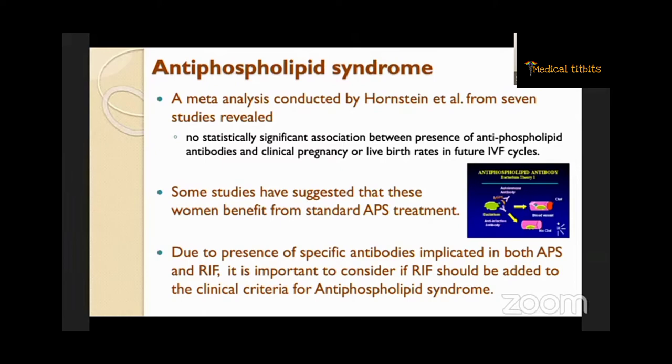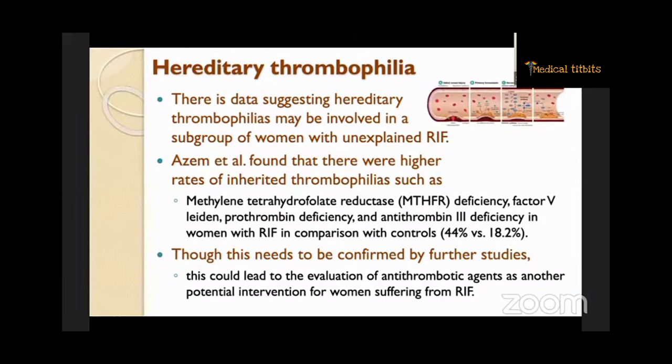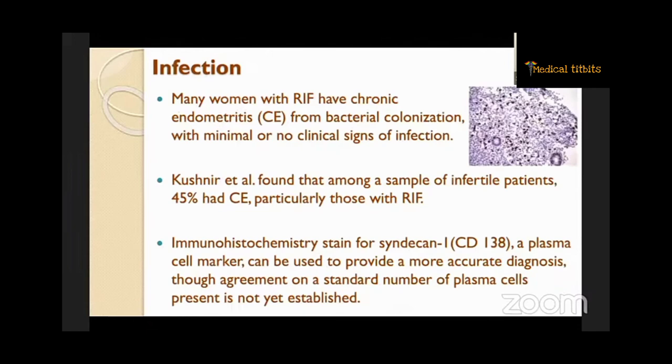When it comes to hereditary thrombophilia, there is data suggesting hereditary thrombophilias may be involved in a subgroup of women with unexplained RIF. Azam et al. found higher rates of inherited thrombophilias such as methylenetetrahydrofolate reductase deficiency, factor V Leiden, prothrombin deficiency, and antithrombin 3 deficiency in women with RIF compared with controls — 44% versus 18%. This could lead to the evaluation of antithrombotic agents as another potential intervention for women with RIF.